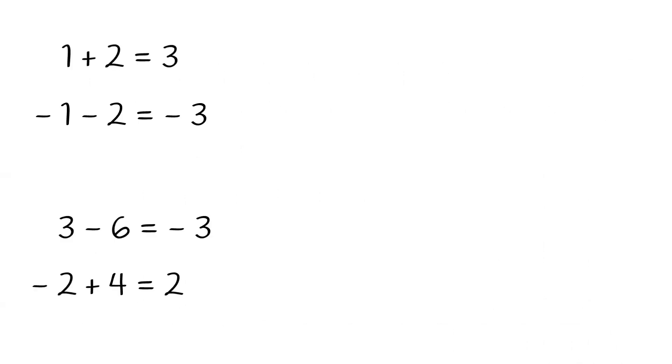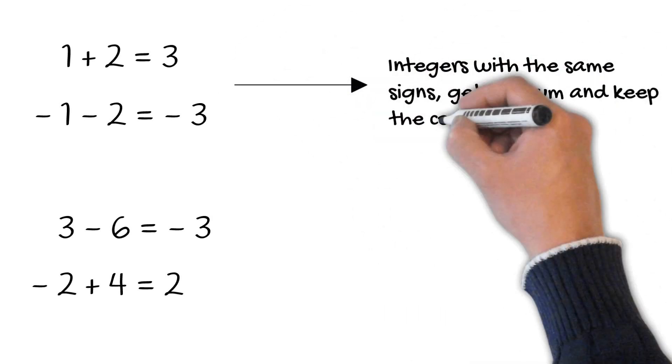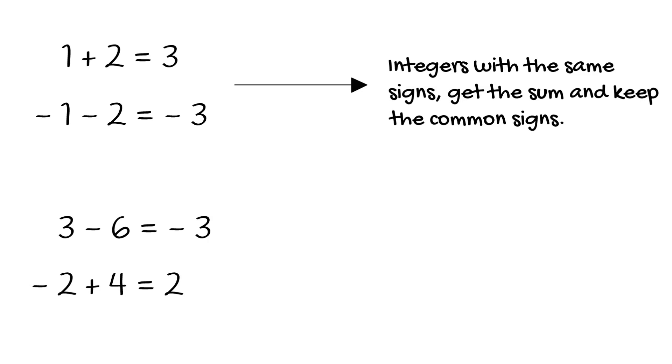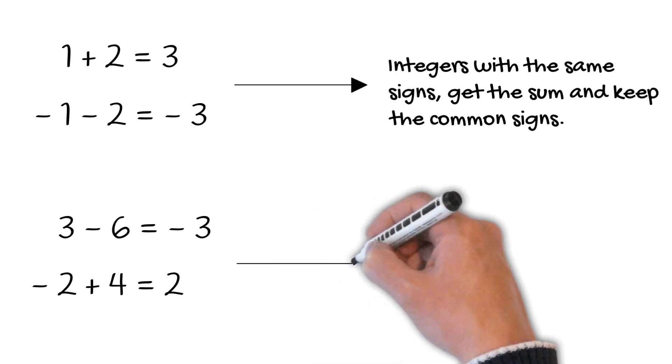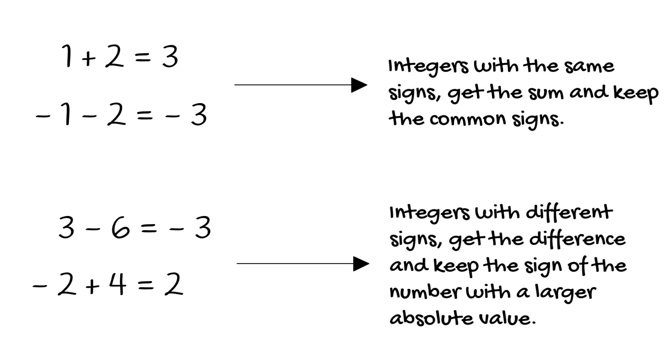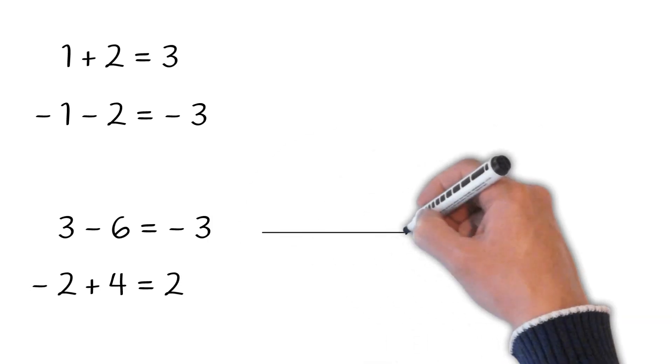Let's take a look at our four examples again. Have you noticed some patterns? When two integers have the same signs, we get their sum and keep the common sign. When two integers have different signs, we get their difference and keep the sign of the number with the larger absolute value.